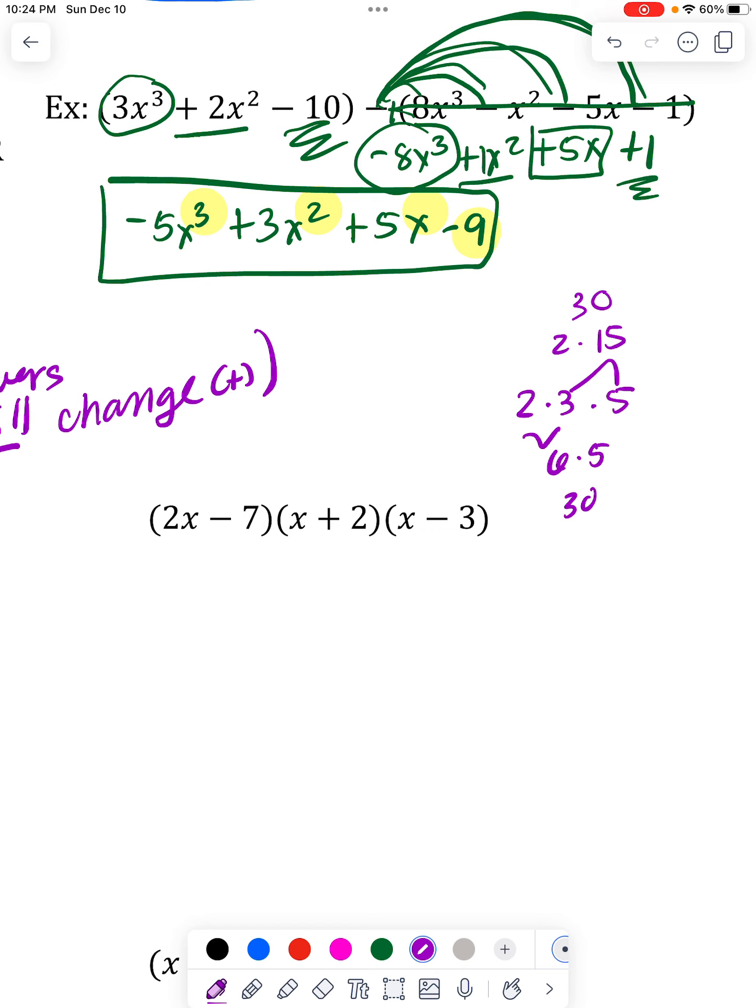So it doesn't matter kind of how you group them or what order you want to do them in. I am going to actually go ahead and foil these two because neither one has a number in front. And then I'll end up doing that double distributing that we just did. So first let's foil.